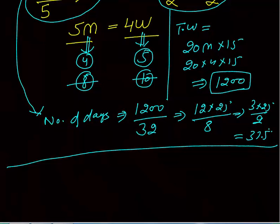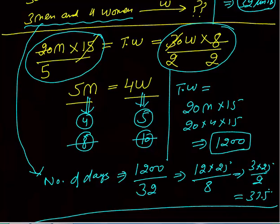This kind of question in the exam you can solve in one minute or less. Just make the equation setting total work equal, calculate five m equals four w, get values of m and w, calculate total work, and finally the answer.